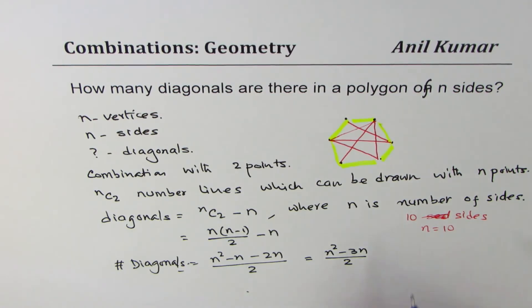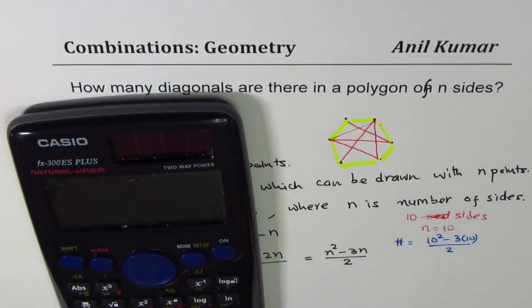So number of diagonals will be 10 square minus 3 times 10 over 2. So we can use the calculator - 10 square is 100. Let's calculate. So 100 minus 30 divided by 2, which is 70 divided by 2.